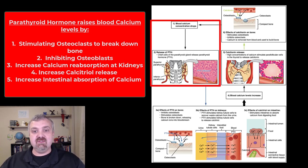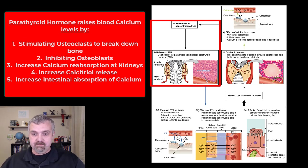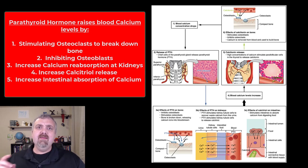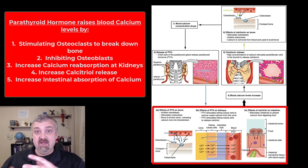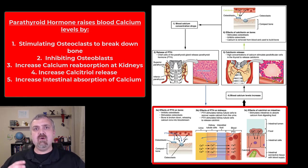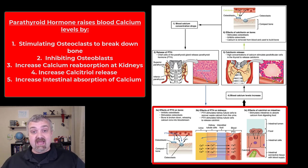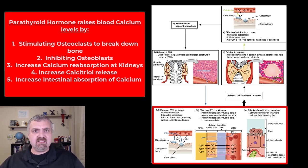When blood calcium concentrations drop, that's going to cause those chief cells of the parathyroid glands to release parathyroid hormone. The two big things it's going to do: first, it's going to stimulate the osteoclasts — these are huge multi-nucleate cells that have digestive enzymes that digest and break down bone — while inhibiting the osteoblasts that would actually build bone. Breaking bone down releases that calcium into the bloodstream.